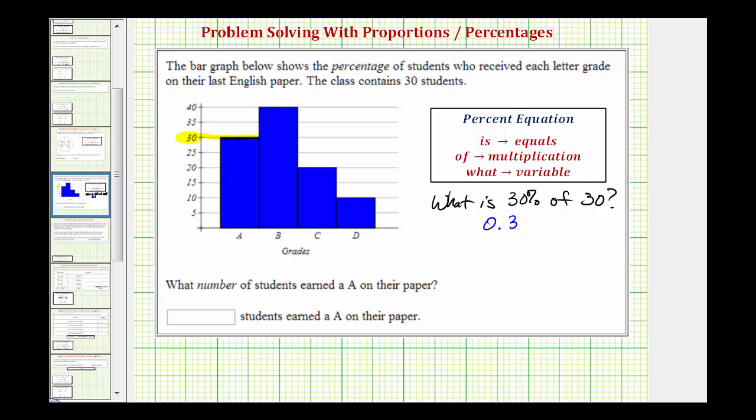So we'd have 0.3 times 30. This product would give us 30 percent of 30.